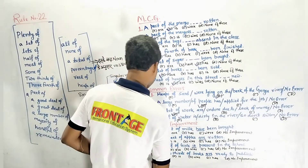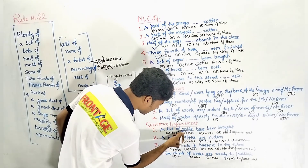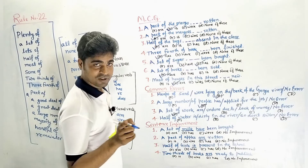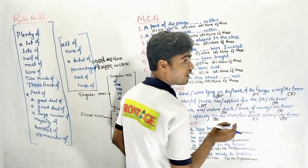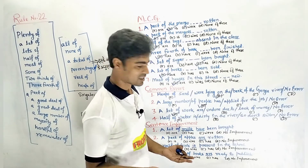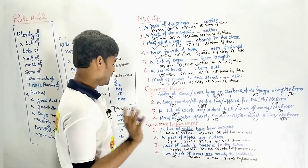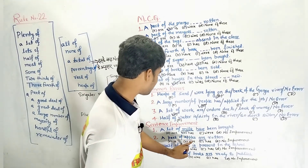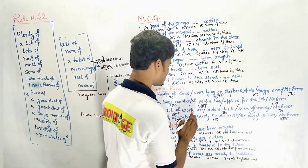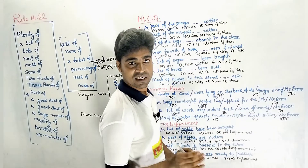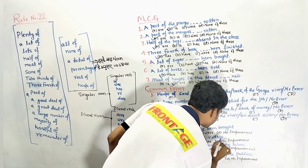Now let's look at sentence improvement. 'A lot of milk have been bought.' Milk is uncountable, so singular verb is needed — 'has' should replace 'have'. With uncountable nouns, a singular verb is always used since they cannot be counted and have no plural form. Next: 'A part of apples are rotten.' Apples is plural and 'are' is plural — the sentence is correct, so the answer is option B: no improvement.